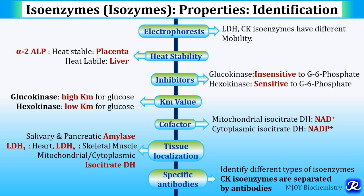Specific antibodies also identify different types of isoenzymes. CK isoenzymes are separated by different antibodies. So based on these properties of isoenzymes, the different isoenzymes can be identified.